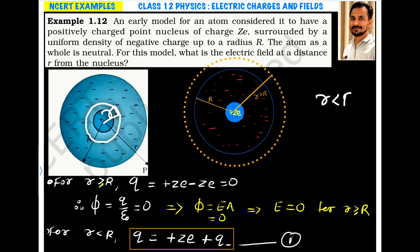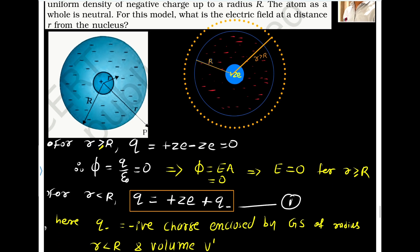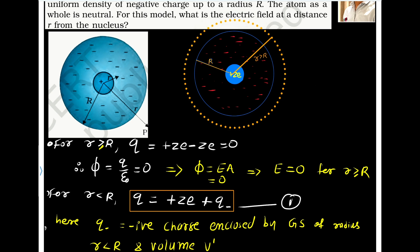The distance r may be less than capital R, or r may be greater than capital R. That is, the point may be located at a distance smaller than the radius or at a distance greater than the radius. Let us first assume a point at a distance r greater than R. This dotted surface is nothing but the Gaussian surface.